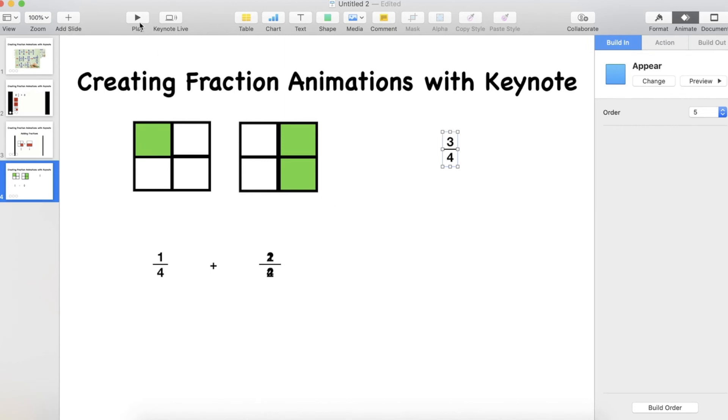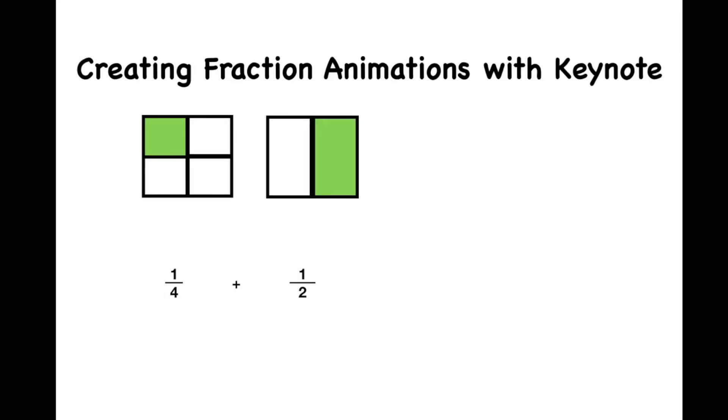Let's test this out and see if my fraction animation actually works. So we've got one quarter plus one half. First of all we need to change one half into two quarters because we need to have like denominators. And then we want to add by sliding our green one across. You can see my answer is three quarters. So that's a really easy way to use Keynote to create a fraction animation.